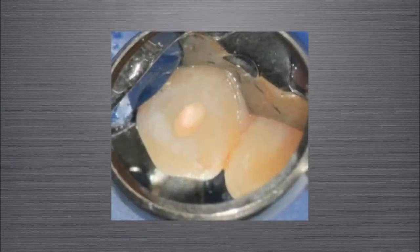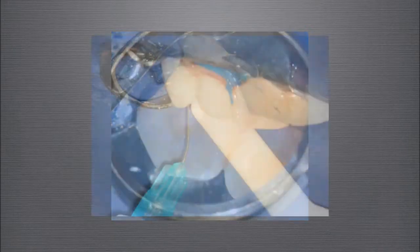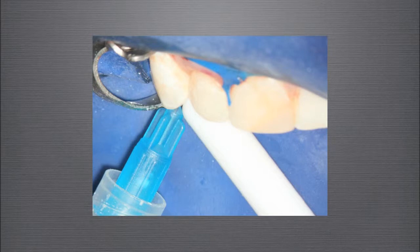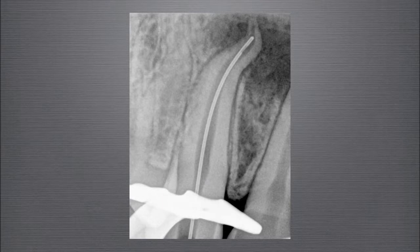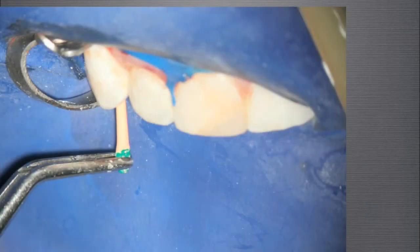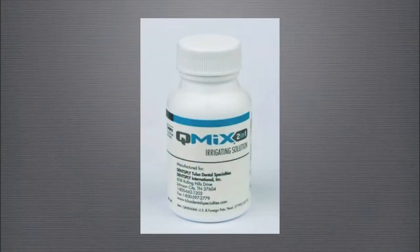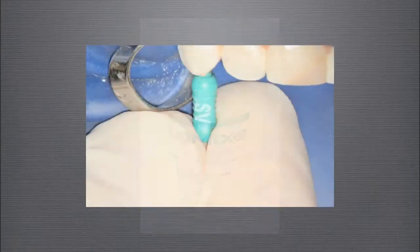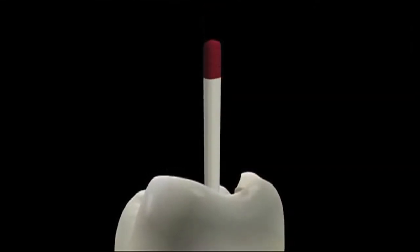After completing my access, it was apparent that the canal already possessed the shape necessary for proper irrigation and obturation. Utilizing the Tulsa Pro-Rinse needle, sodium hypochlorite was delivered to within 1 millimeter of the confirmed working length. Note the position of the Pro-Rinse needle in this radiograph. Agitation of the irrigant was performed by pumping a gutta-percha point in an apical-coronal manner — note the curve imparted on the point. QMix was utilized as the final irrigant, and a number 35 size verifier was used to confirm adequate shape for the GuttaCore carrier.